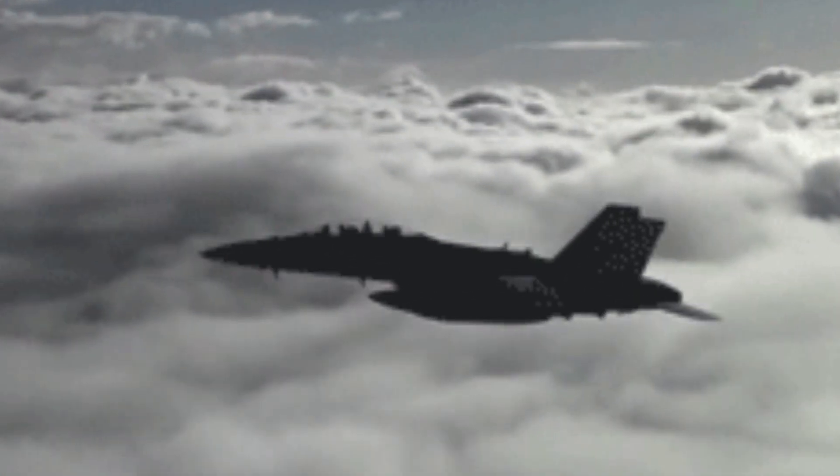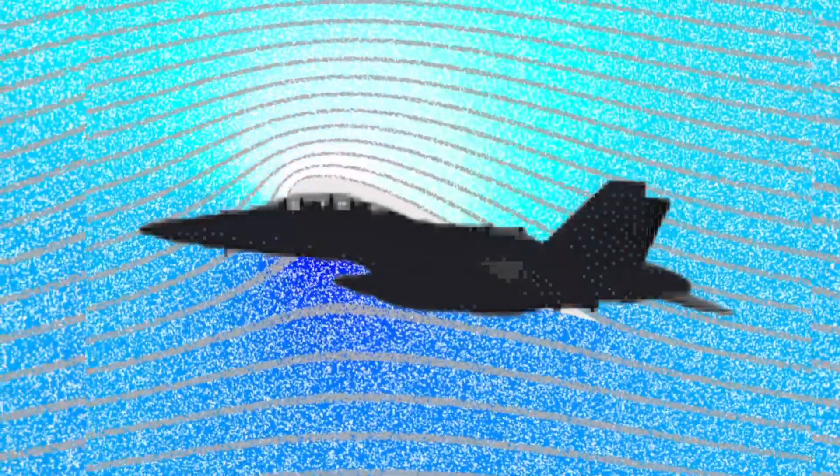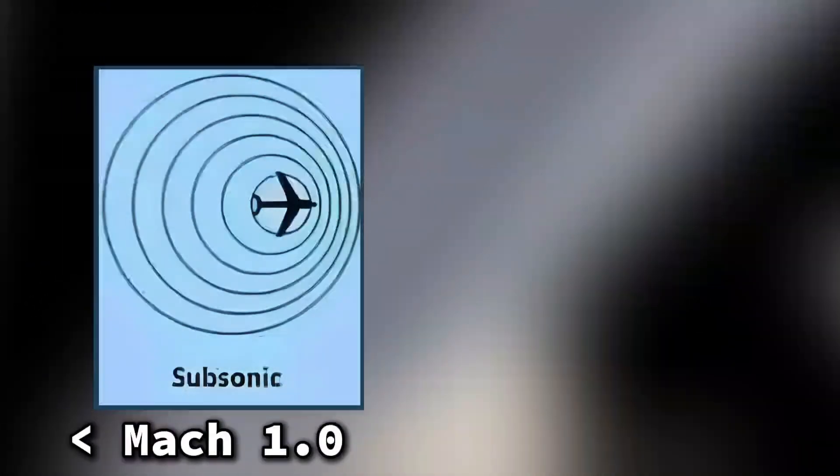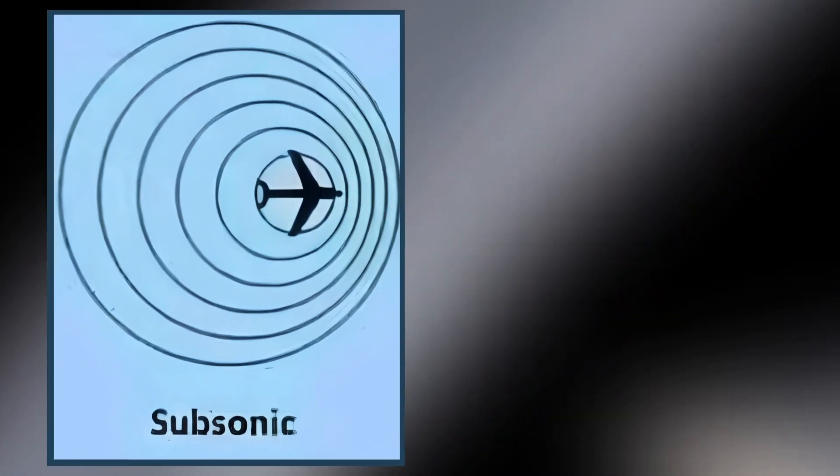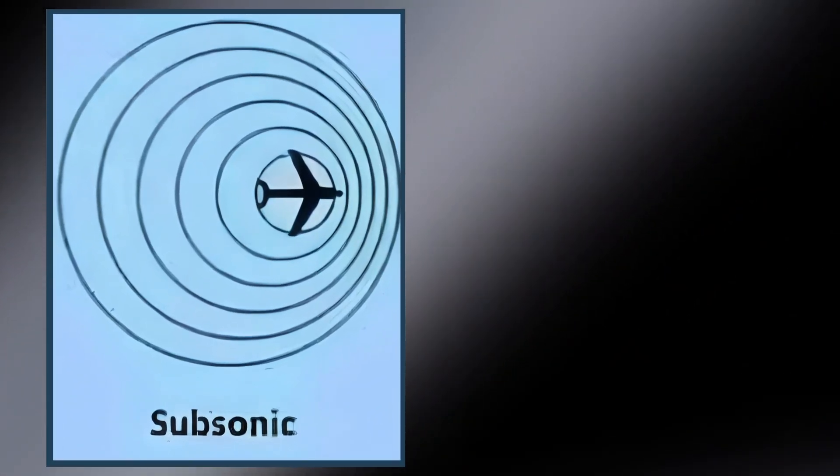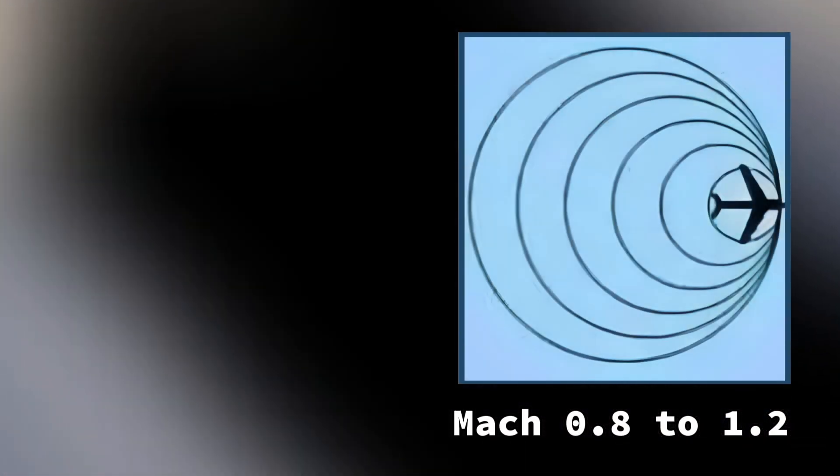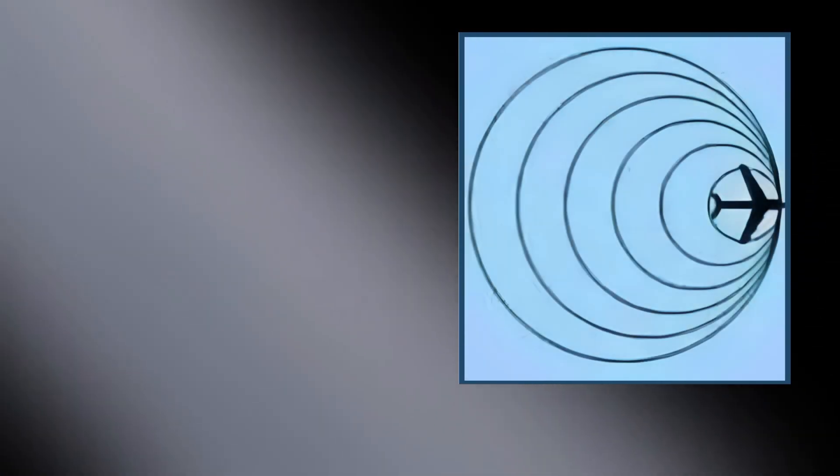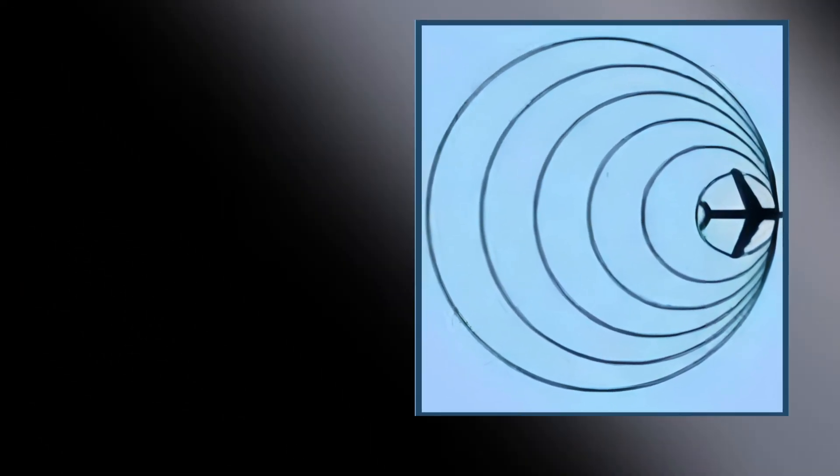As an aircraft accelerates towards the speed of sound, it encounters significant changes in airflow behavior. At subsonic speeds, pressure waves created by the aircraft can travel ahead of it, giving the surrounding air time to move out of the way. As the aircraft approaches transonic speeds around 0.8 to 1.2 Mach, these pressure waves begin to compress and coalesce, forming shock waves.